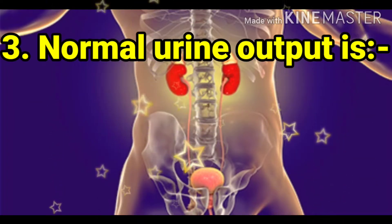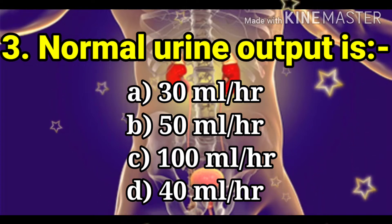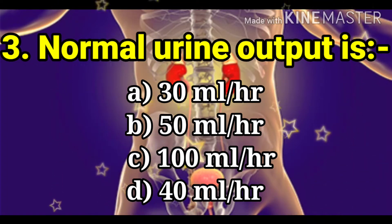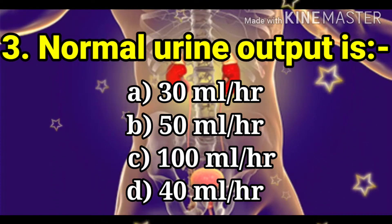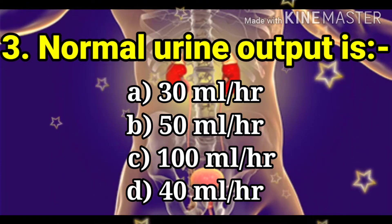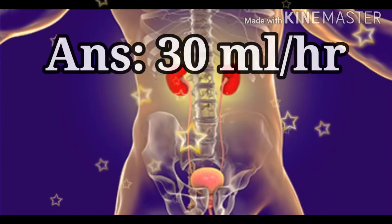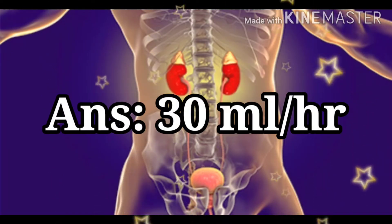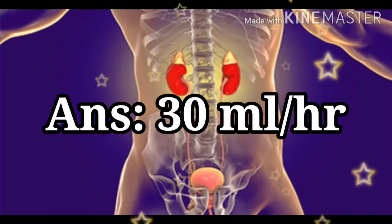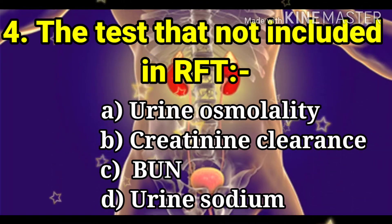Next question: normal urine output. The options are 30 ml per hour, 50 ml per hour, 100 ml per hour, and 40 ml per hour. The answer is 30 ml per hour.